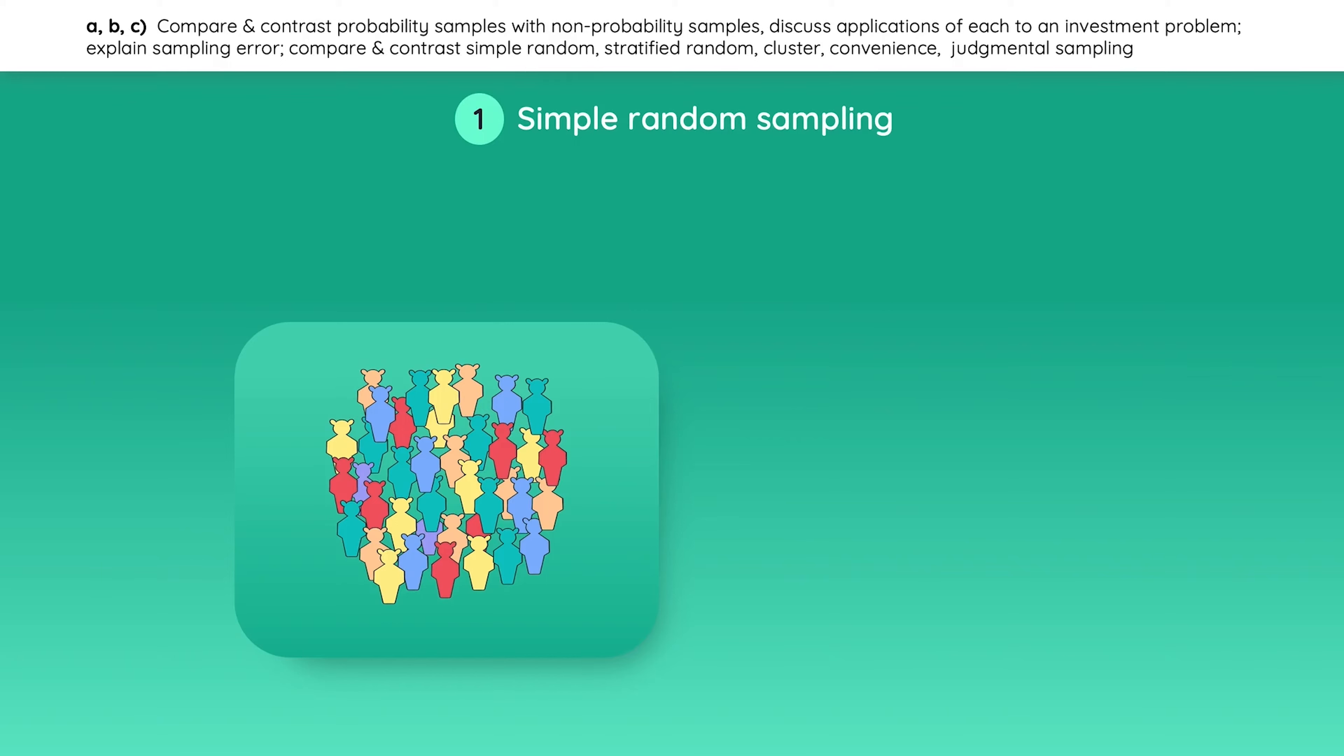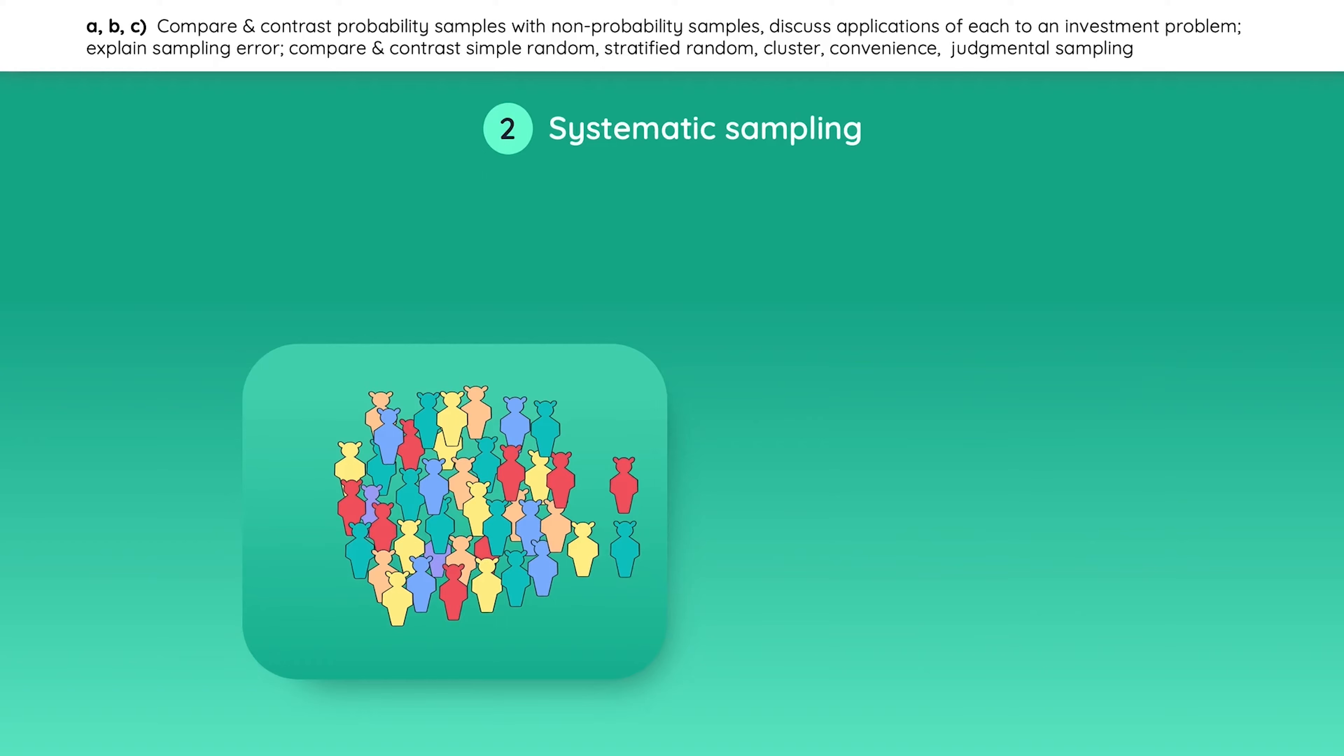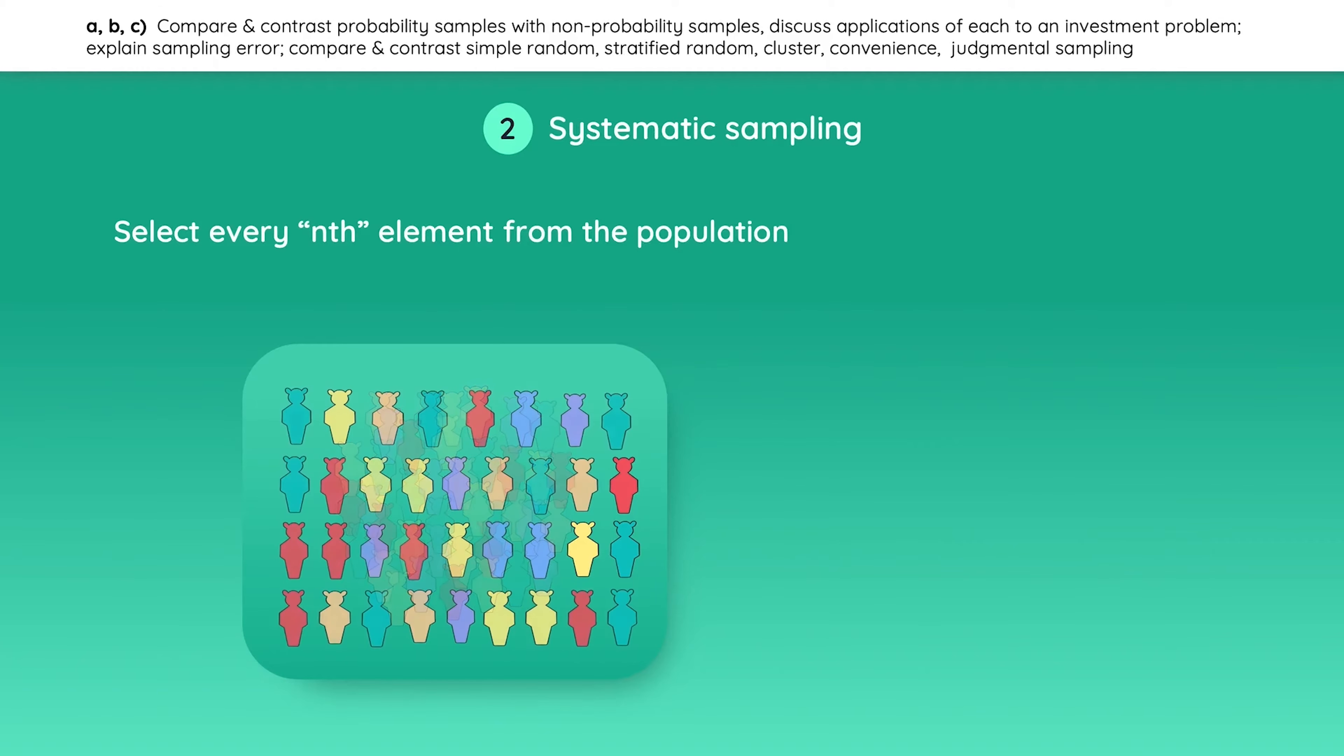Simple random sampling means that members of the population are selected at random. So every time you take a sample, each member has the same chance of being selected. Systematic sampling is when you select every nth member. So for example, you could arrange this population by their age and then select every fifth member for the sample.